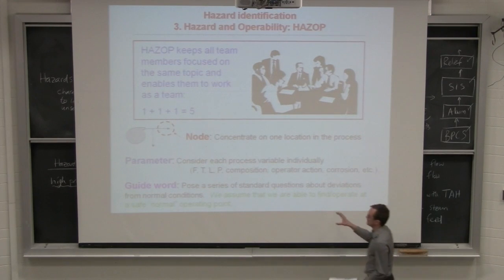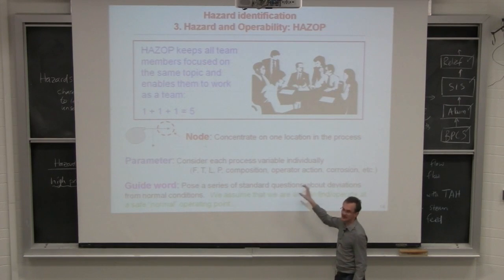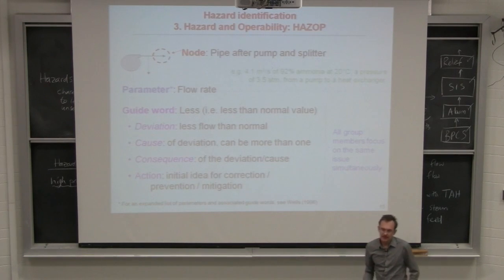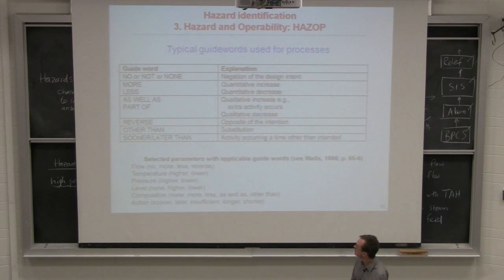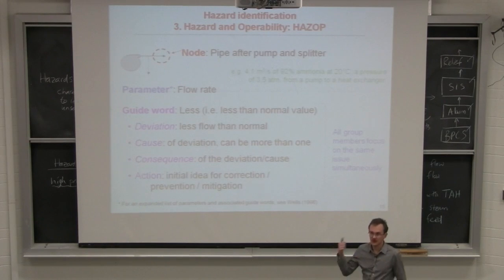So you can see how combinatorial this is and why this is more than a few hours to even hazard a simple process. And once you've picked up your parameter, then you're going to pose some guide words that are relevant to that parameter. So you're going to look at deviations. Your guide words can be of several types. If we consider the node to be the pipe after the pump and after the splitter, the parameter we might consider is flow rate. So we've got our node, we've got our parameter, and the guide word I might select is less.